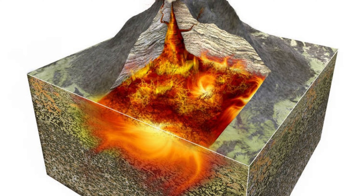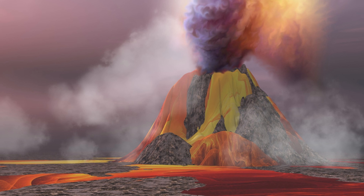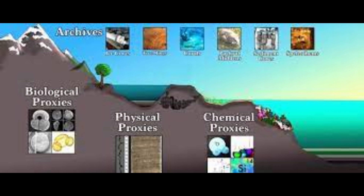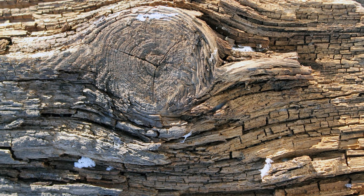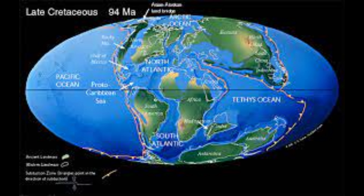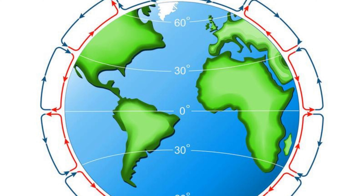Geological cycles are not only long-term processes but can also trigger sudden climate events. For instance, super volcanoes can release massive amounts of ash and gases into the atmosphere, causing rapid cooling. The study of paleoclimatology involves examining ancient climate records to understand past geological cycles — ice cores, tree rings, and sedimentary rocks are valuable sources of information.